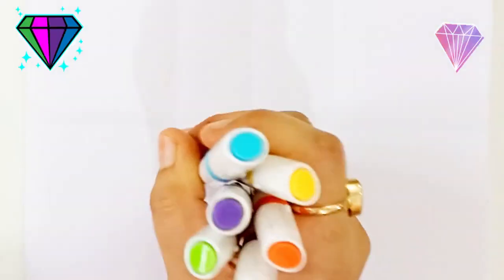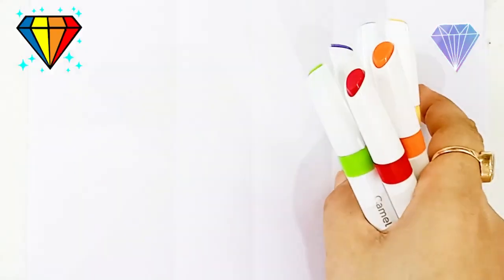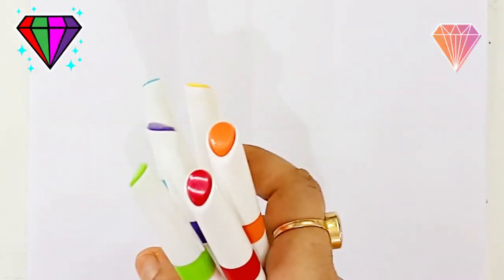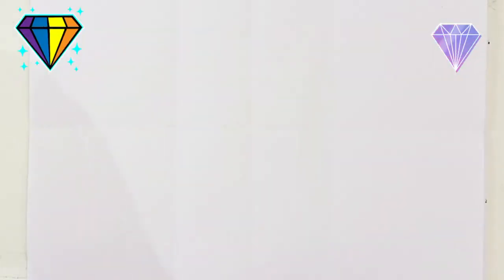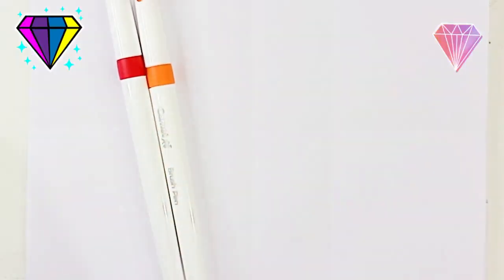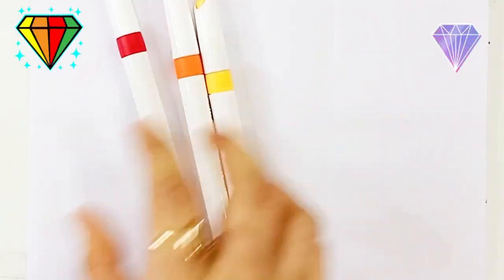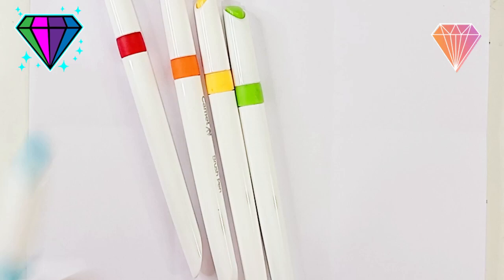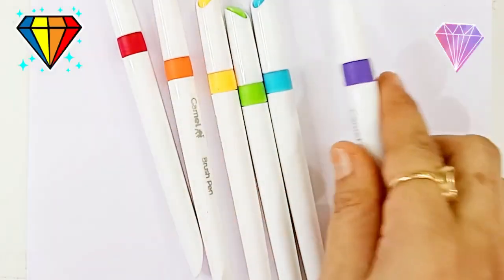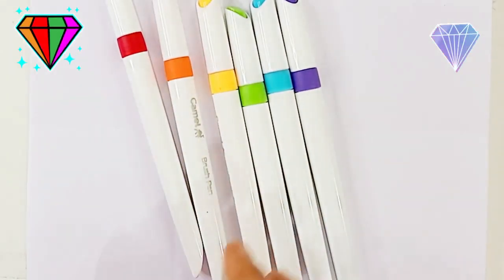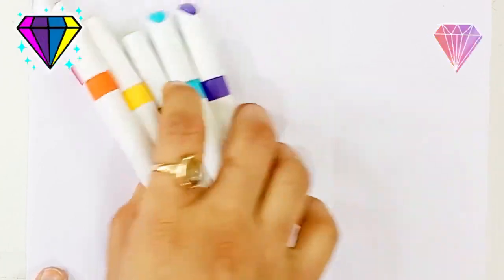Hello everyone. Let's learn some rainbow colors and draw shapes for pink. Red color, orange color, yellow color, green color, sky blue color, purple color. These are all rainbow colors.